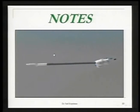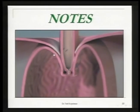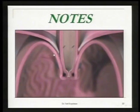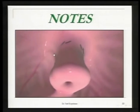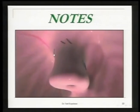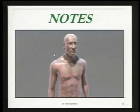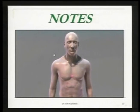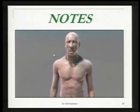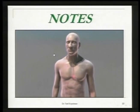Inserted through the mouth, the EsophyX device is used to reconstruct a 3–5 cm, 270–310 degree anti-reflux valve. TIF is surgery without incisions or the complications associated with more invasive surgical procedures, and is performed under constant visualization.